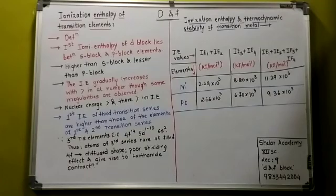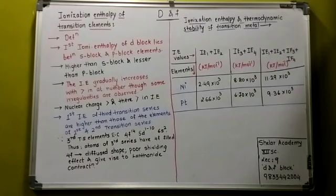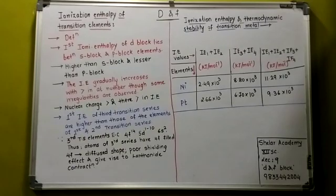When the oxidation state is plus 4, Pt⁴⁺ would be more stable than Ni⁴⁺ because the combined ionization enthalpy values for platinum are less in that case. Smaller the value, greater is the stability. That is all regarding the thermodynamic stability of the transition compounds. In the next lecture, we proceed with the oxidation states.